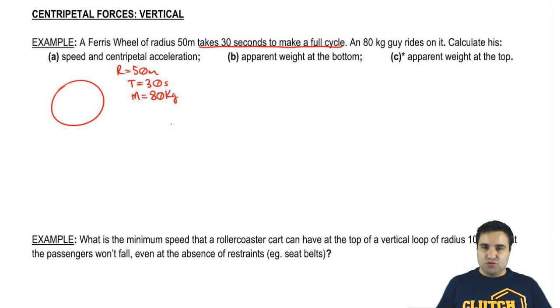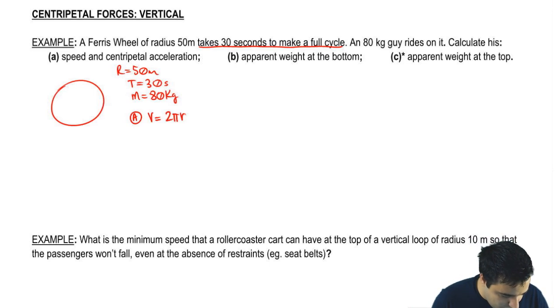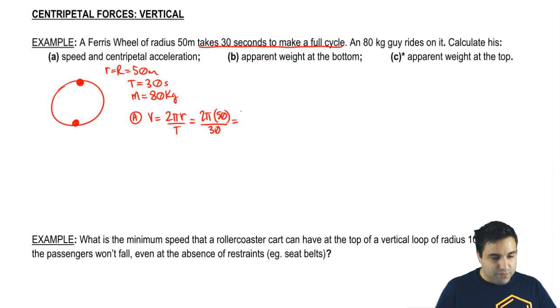Calculate his speed and centripetal acceleration. So this is straightforward. V is 2πr over t, or 2πrf. I have t, so I'm going to go with this version of the equation. If you ride on a ferris wheel, you're always at the edge of it, so your distance from the center is basically the same thing as your radius. So I can plug these numbers in here. 2π times 50 over 30, and if you do all this, I have it here, you get 10.5.